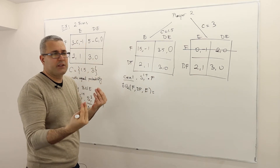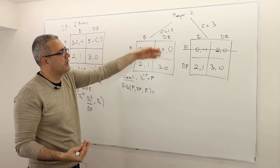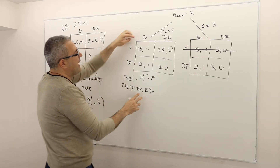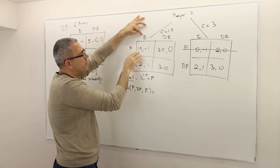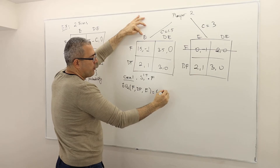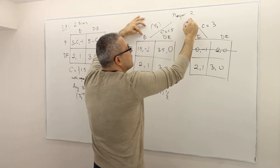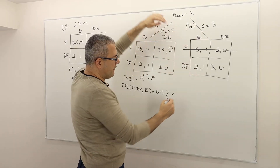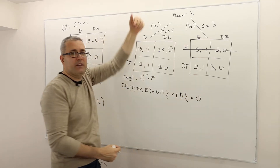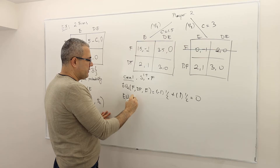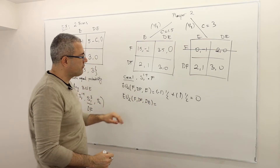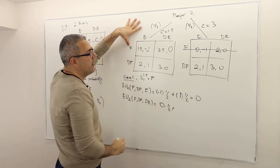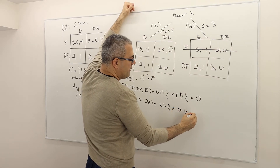So what is the expected payoff of player 2, given that player 1 plays fight here and don't fight here, and then player 2 plays enter? He has only two actions, so I need to calculate his expected payoff of playing E and his expected payoff of playing don't E, and compare these two. If he plays enter, his opponent is playing fight, so his payoff will be -1 with probability one-half — because this is the one-half probability event — plus, when he plays E in this game, his opponent is playing DF, so he's going to get 1 with probability one-half. So the expected utility is going to be 0. What is player 2's expected payoff if he plays don't enter instead? If he plays don't enter, he's going to get 0 times one-half probability, and again 0 times one-half, so it's 0.